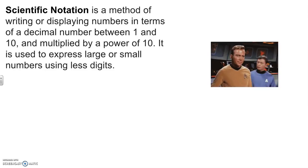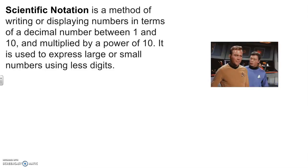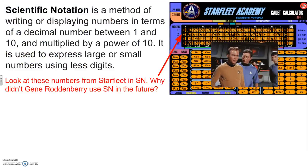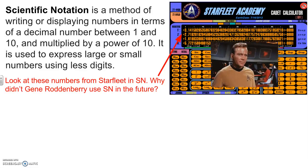Scientific notation is a method of writing and displaying numbers in terms of a decimal between one and ten, and multiplied by a power of ten. It's used to express large or small numbers using less digits. Not everybody uses scientific notation. Even Gene Roddenberry didn't use it in Starfleet Academy, but we're going to try to use it now.